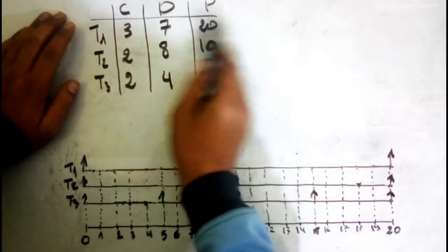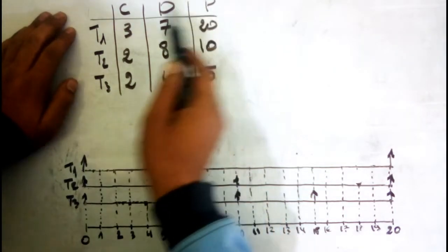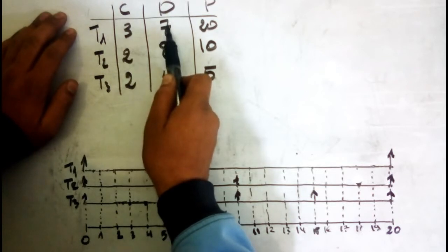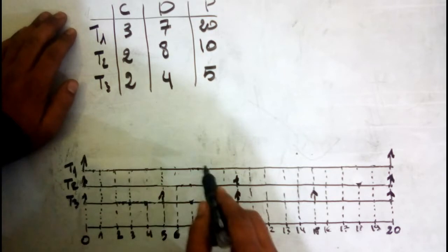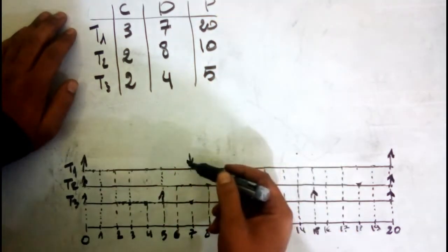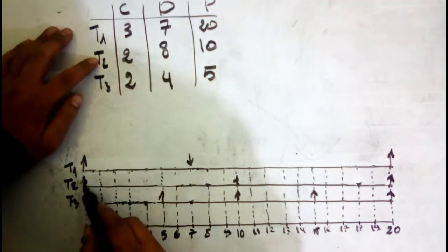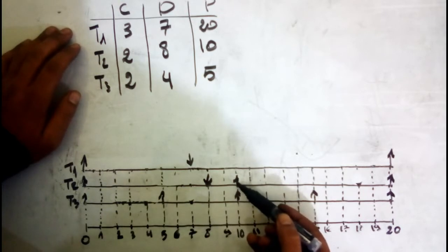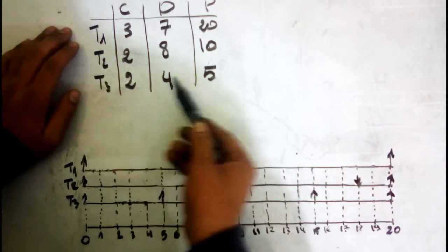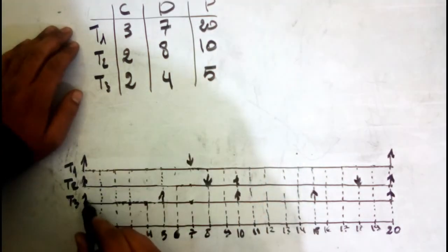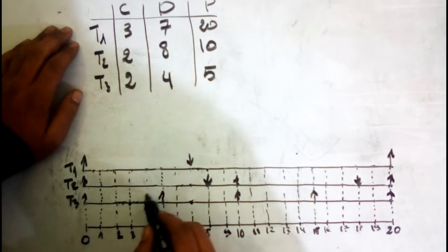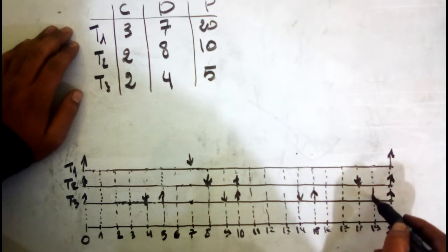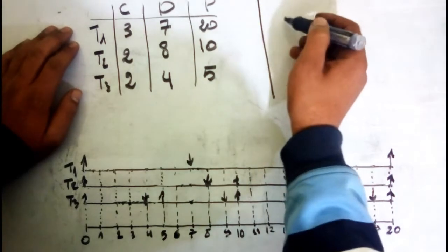For the deadline: T1 must run 3 units of time before reaching 7 units of time, so the deadline is from 0 to 7, marked with a bottom arrow. For T2 the deadline is 8, so in the first period it goes from 0 to 8, and in the second period from 10 to 18. For T3 the deadline is 5, so the first period goes from 0 to 4, then 4 to 9, then 10 to 14, then 15 to 19.